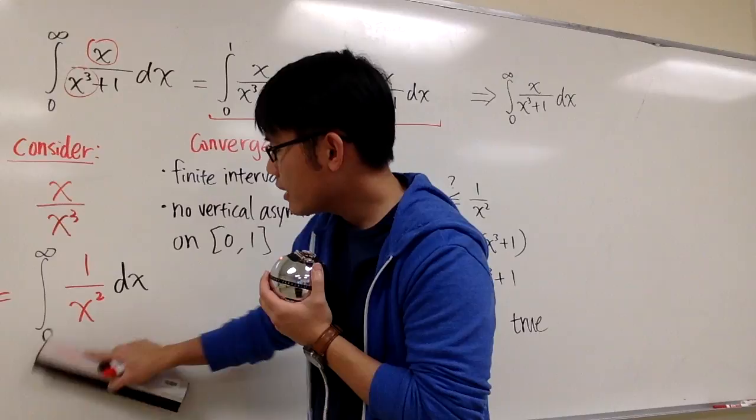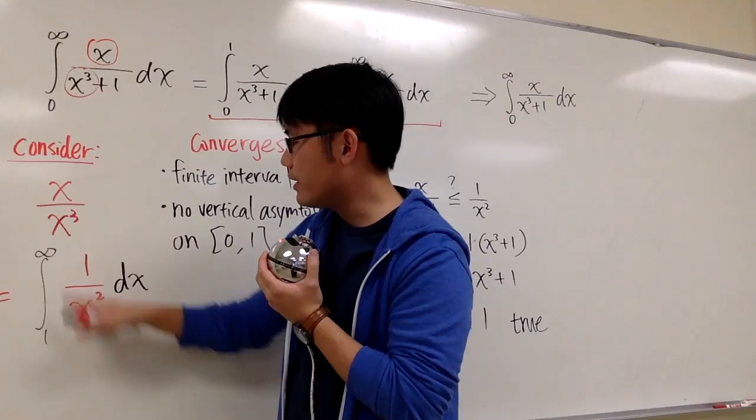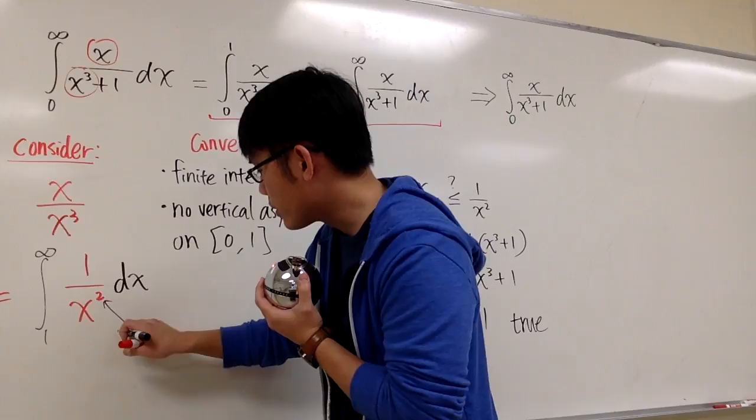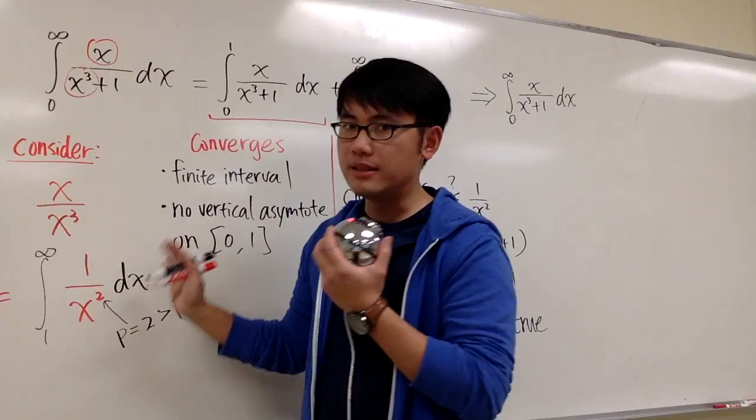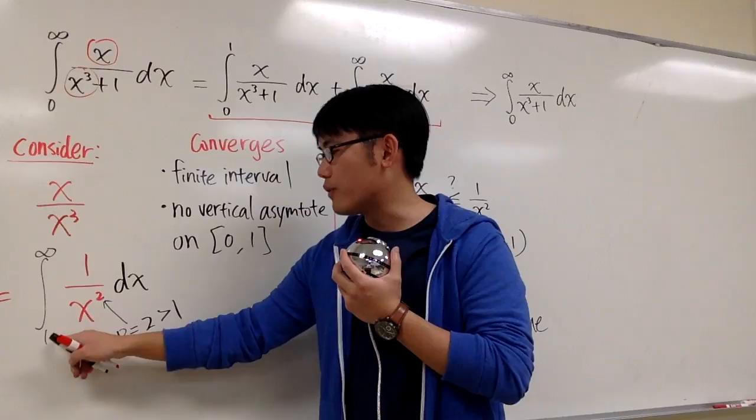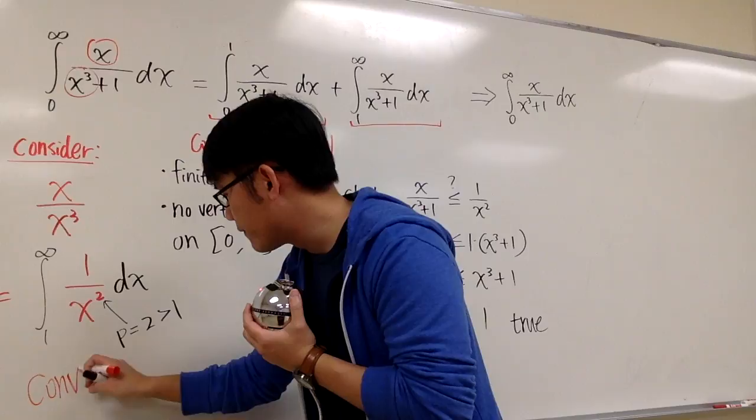However, if we start with 1 — if we have the integral from 1 to infinity of 1 over x squared — the power p equals 2, which is greater than 1. By the p-test, which only works when you have from 1 to infinity as a type 1 situation with no vertical asymptote, this integral converges. This is something we can use.